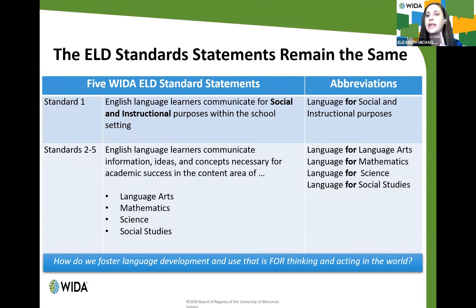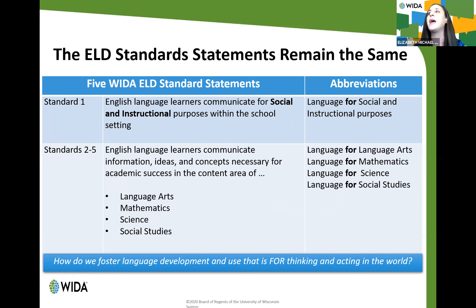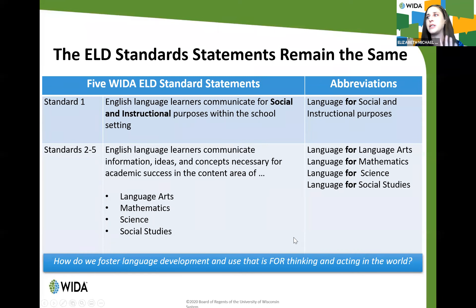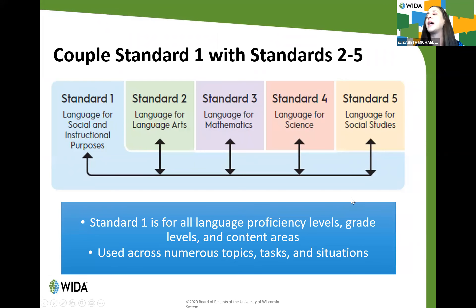The standard statements themselves have remained the same, but one key tweak: the abbreviations have changed by one word. Prior editions said 'language of' — language of science, language of social studies — and now we say 'language for,' honing in on language as a tool: this is the language that students need for this area. A small but purposeful change.